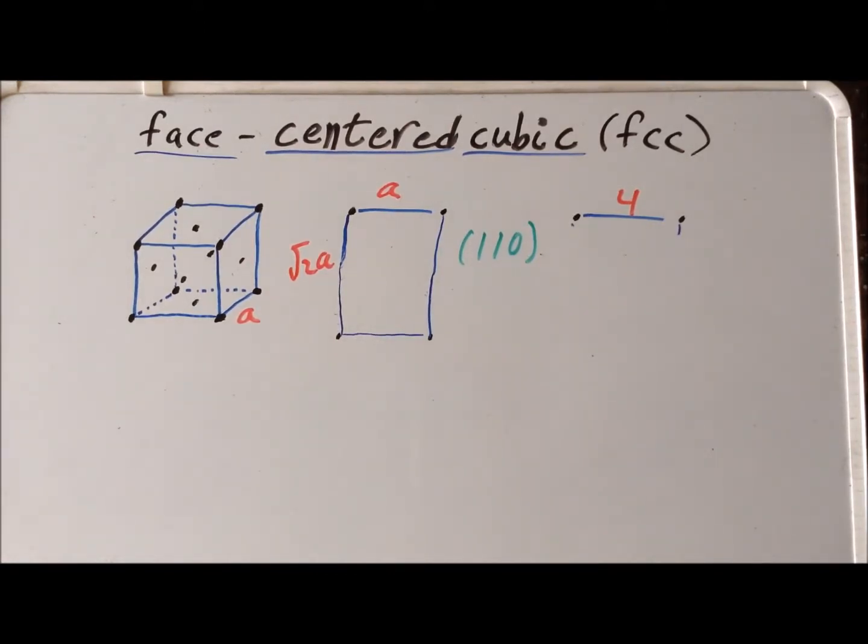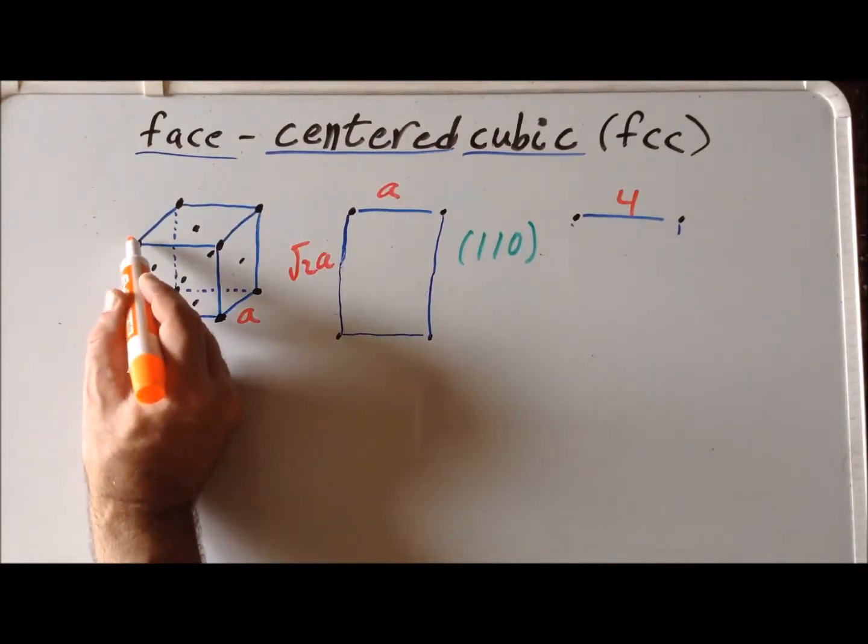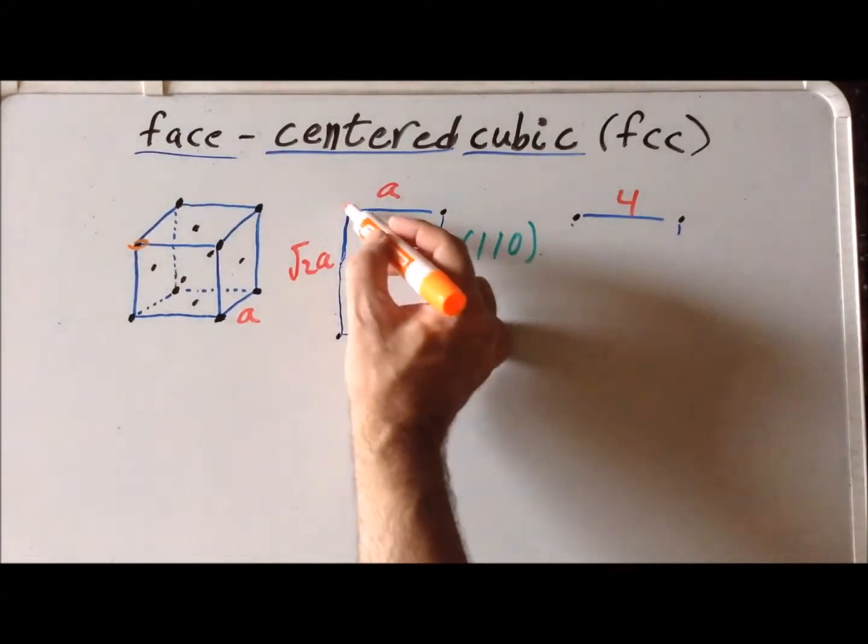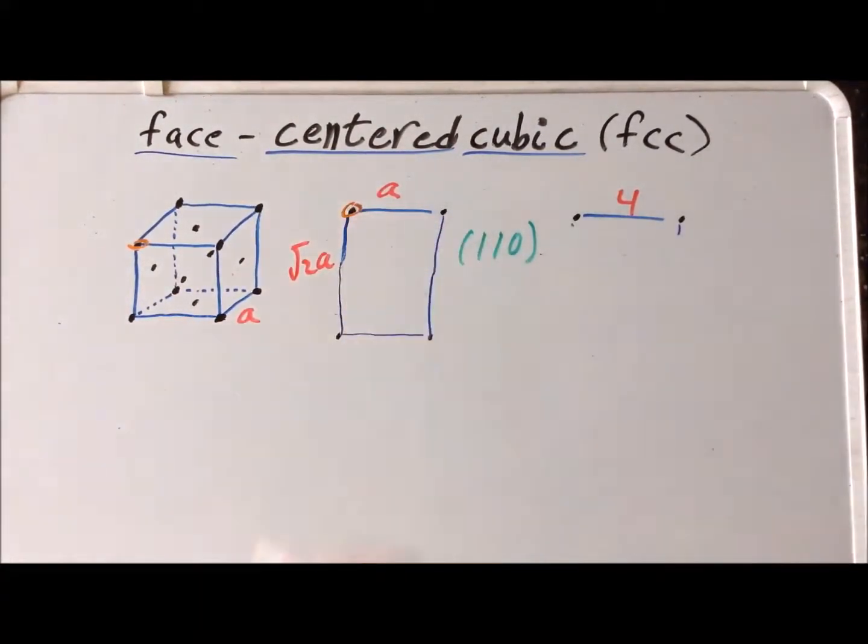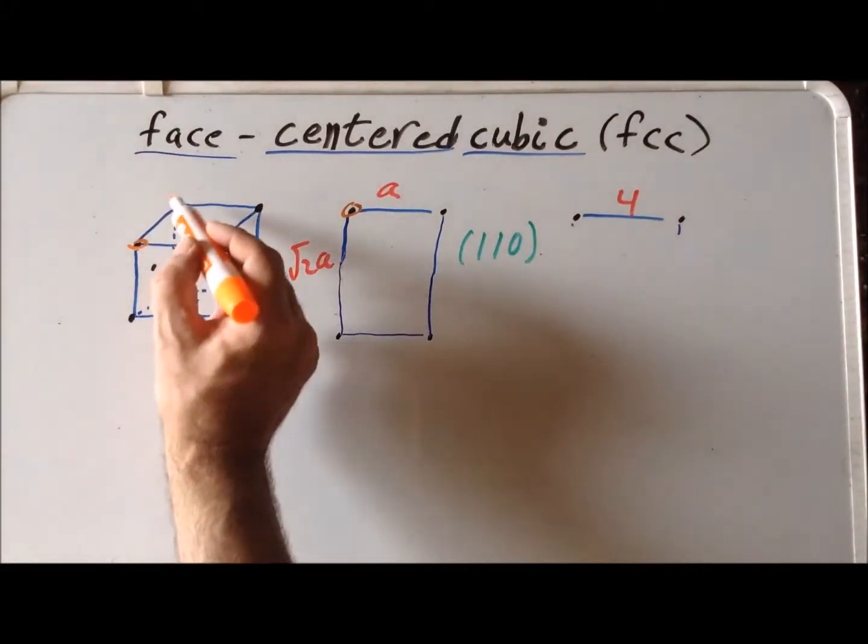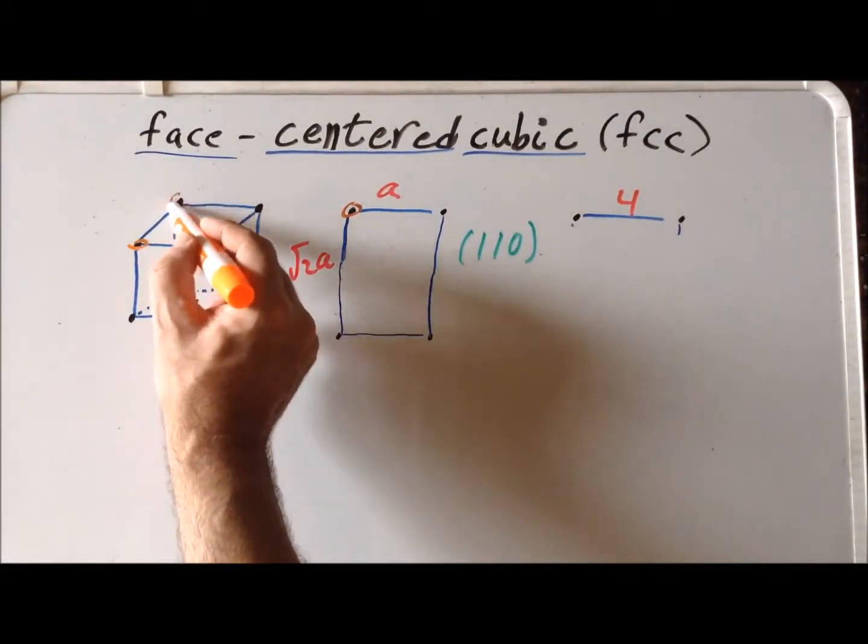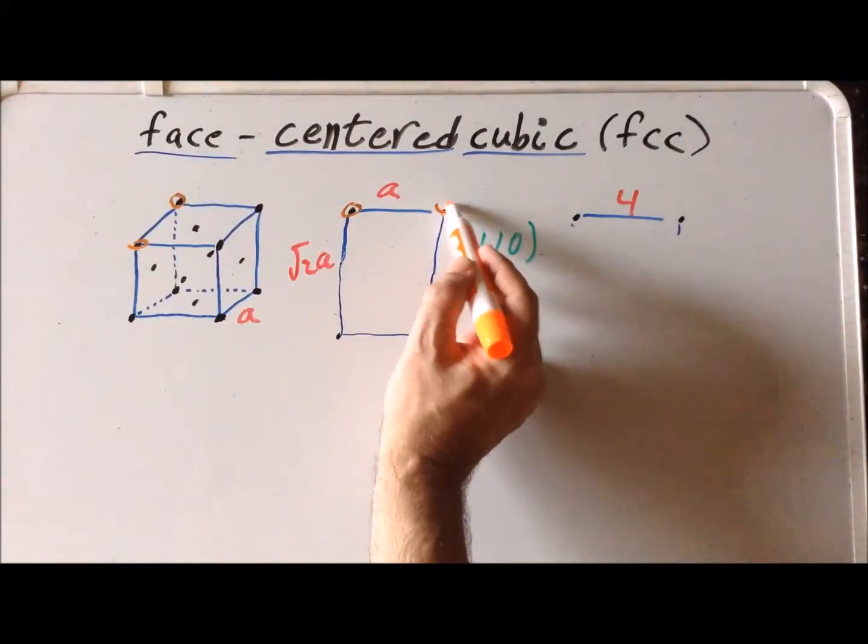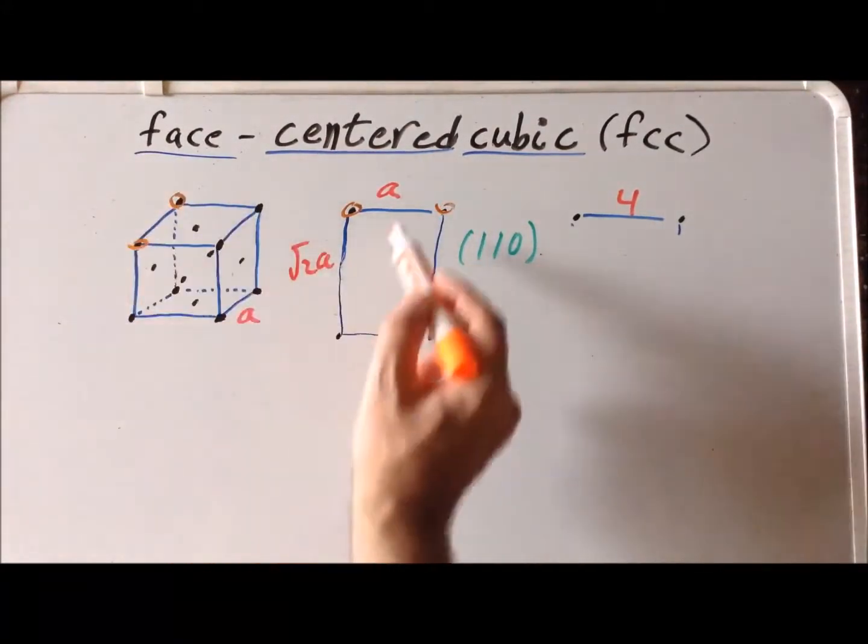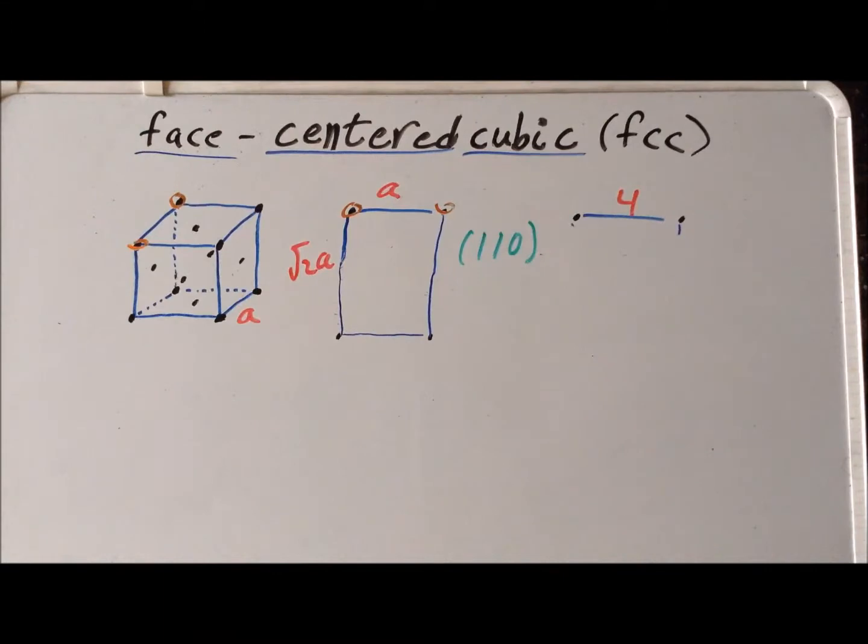To form the 110 face for the face-centered cubic structure, we can start and select this particular atom, and in our top projection, that corresponds to this particular atom. Extend it to align this particular atom, which goes here. And we know that this particular dimension in the face-centered cubic structure has a length a.